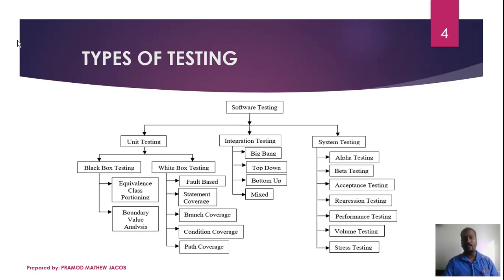Alpha Testing is run by the developer. In Beta Testing, a beta version of the software is released to a few customers, and customers provide feedback to the developer. In Acceptance Testing, the customer decides whether to accept the product. These are the three customer-facing testing types: Alpha, Beta, and Acceptance Testing.